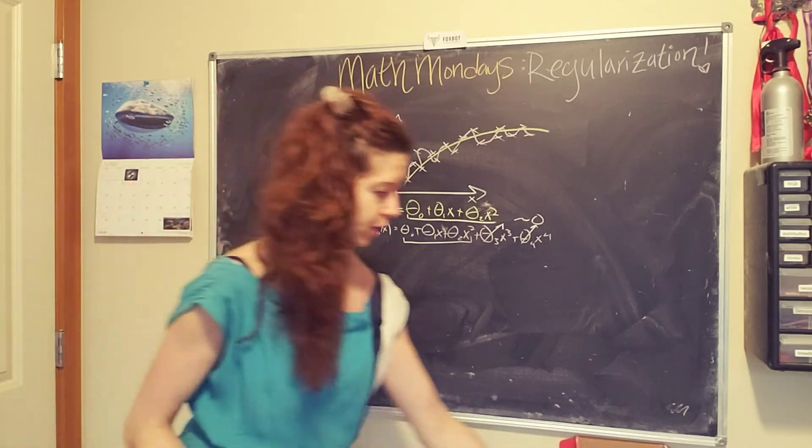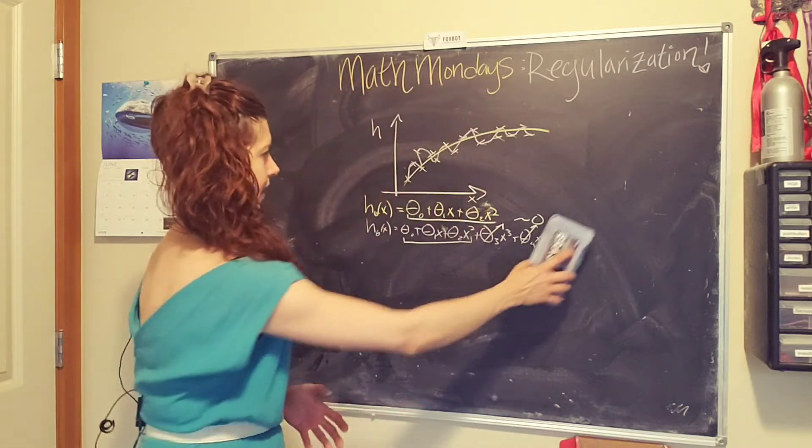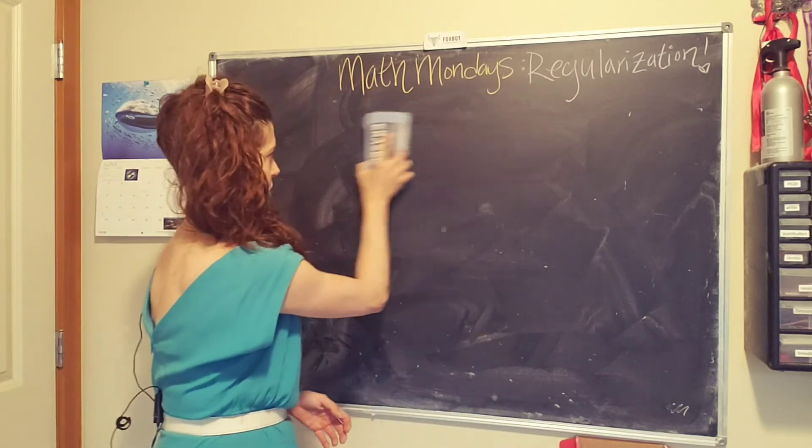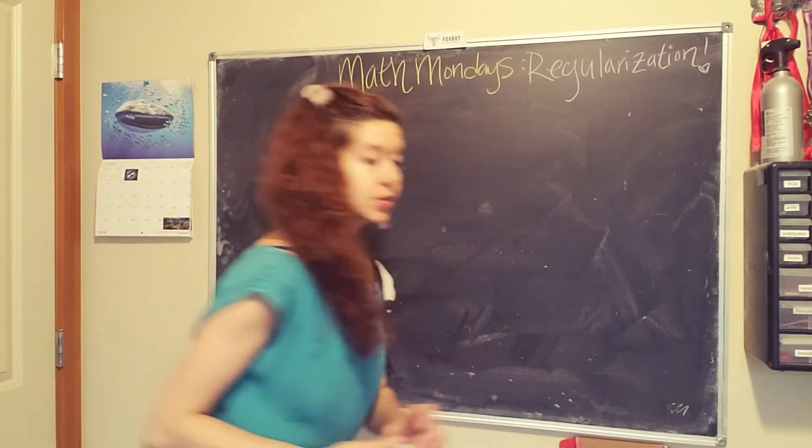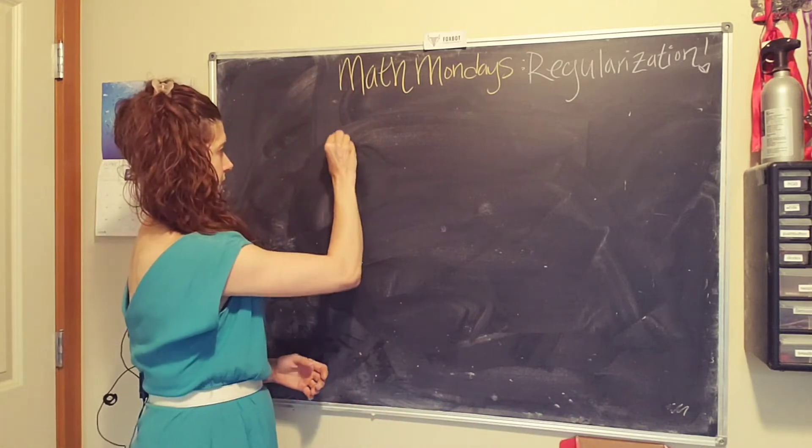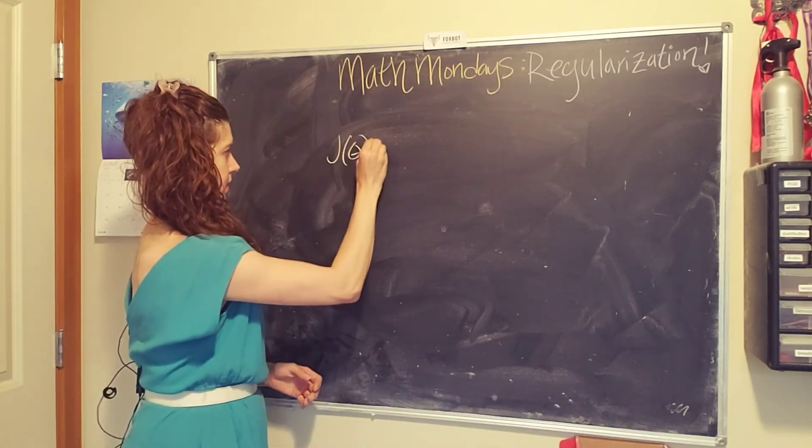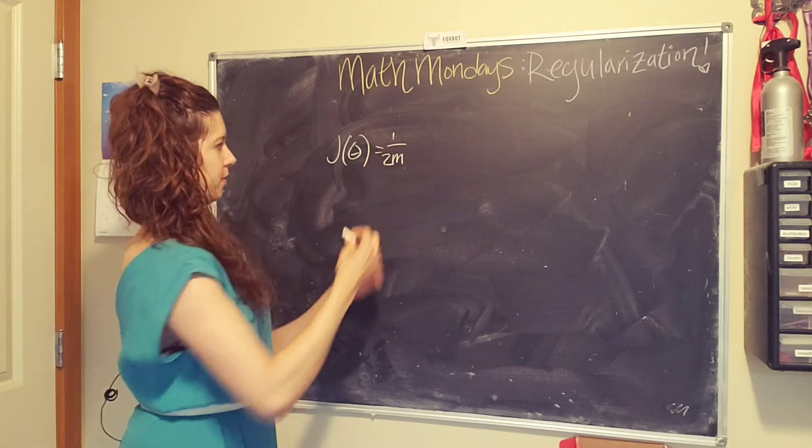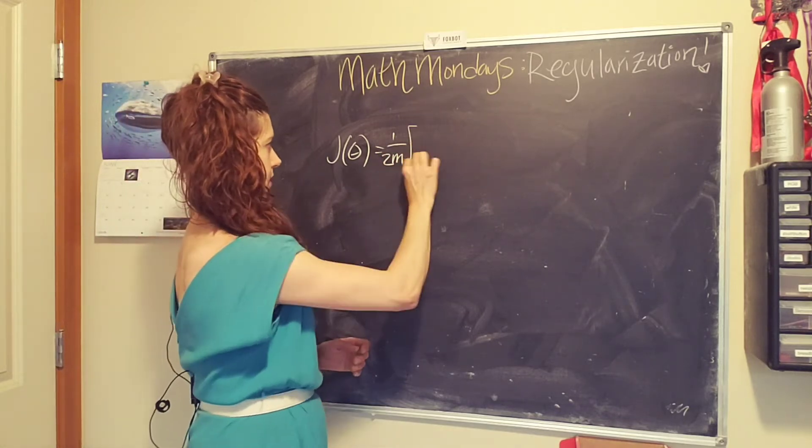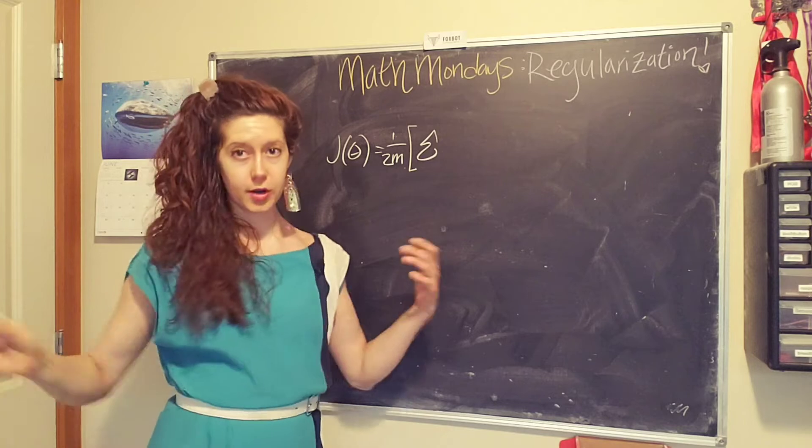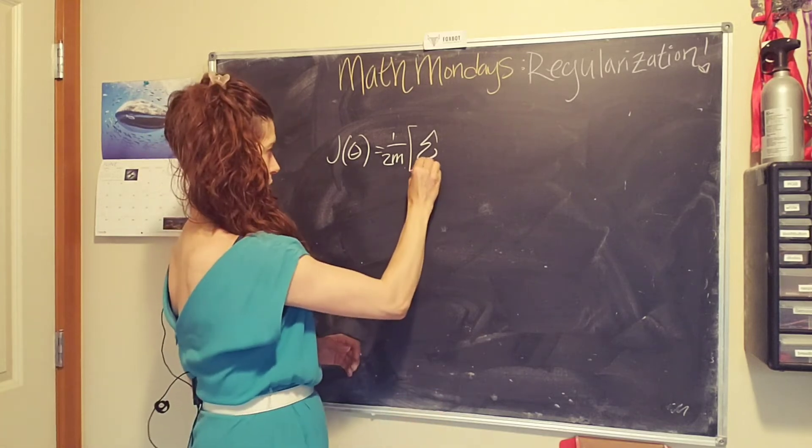To do this we need to add a term to our cost function. So our cost function is going to look like this: we have j of theta and it's our fancy average multiplied by the total number of data points. The first part is the same that we've seen before.